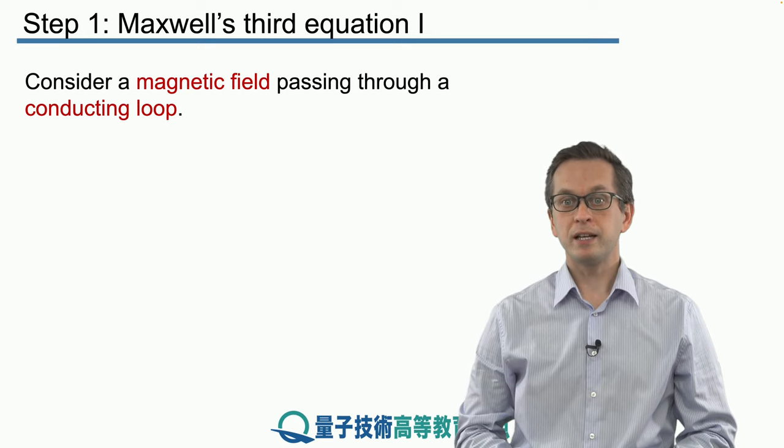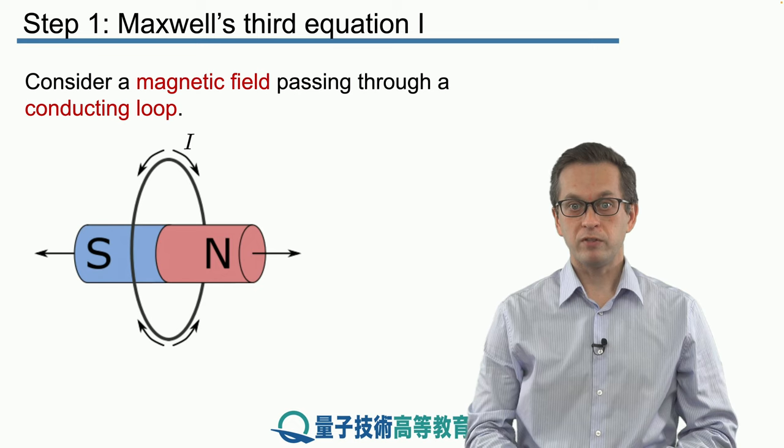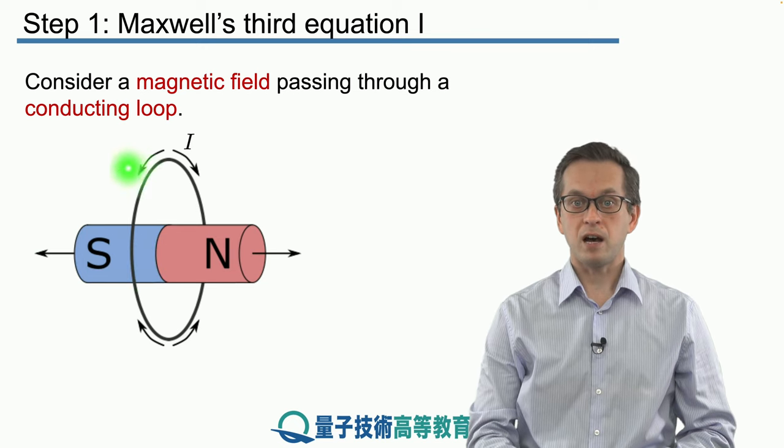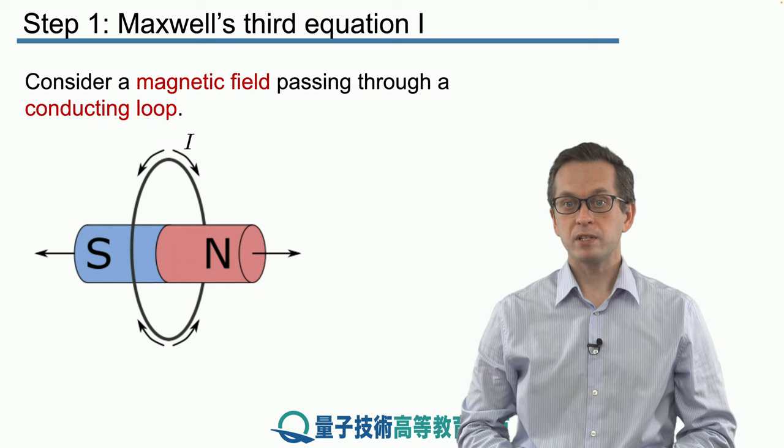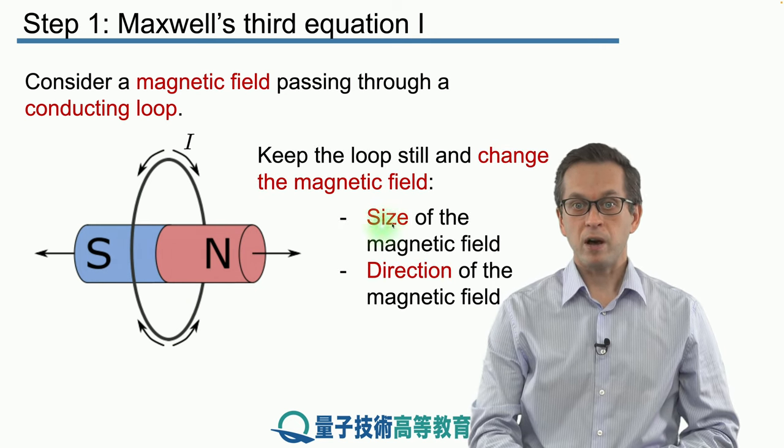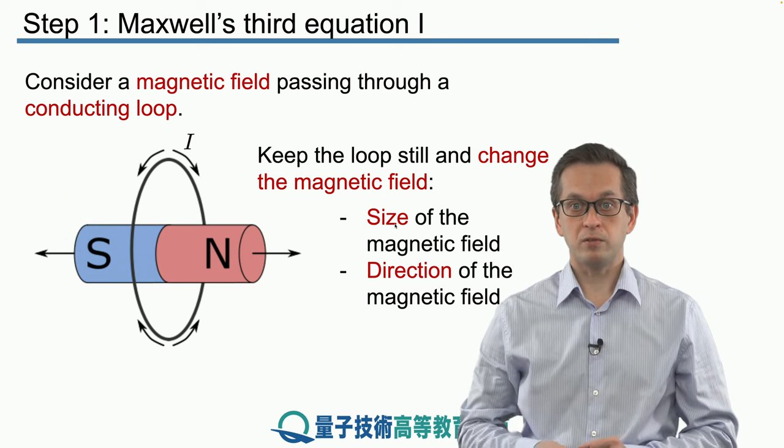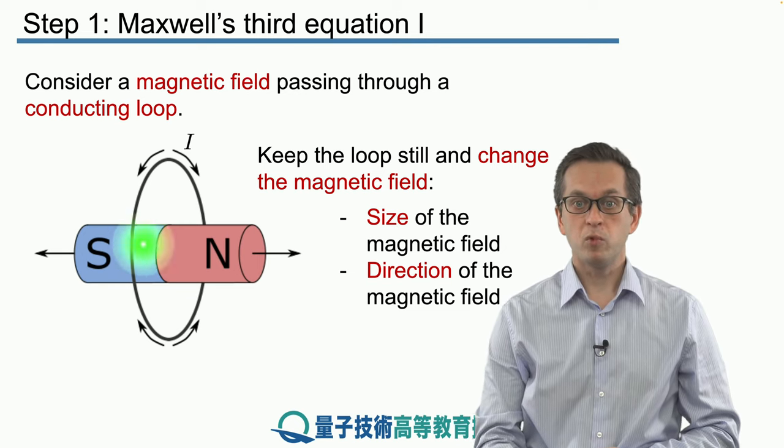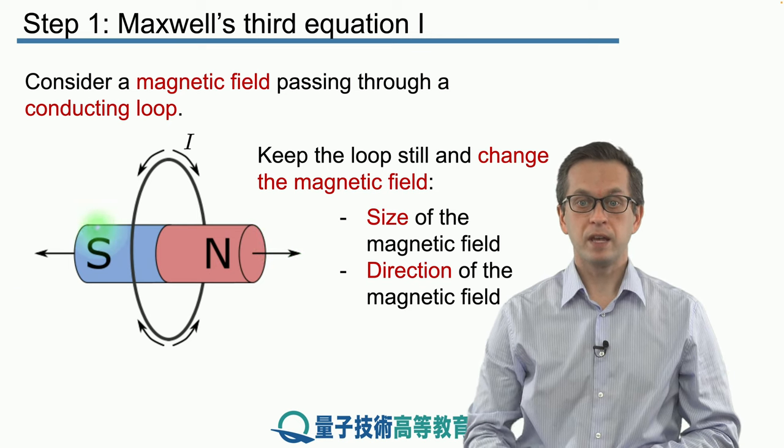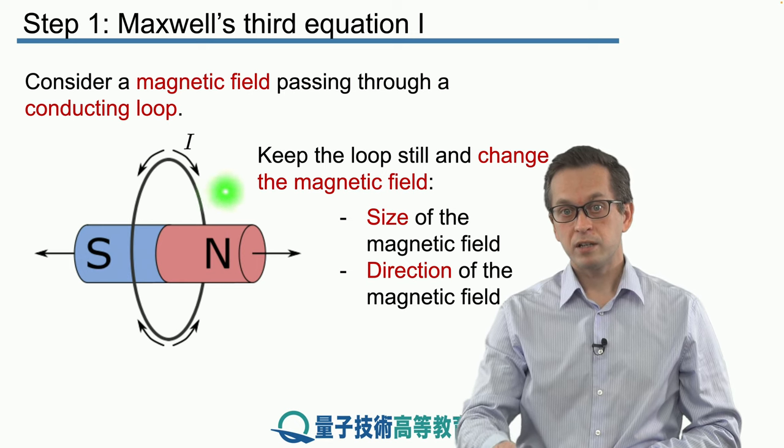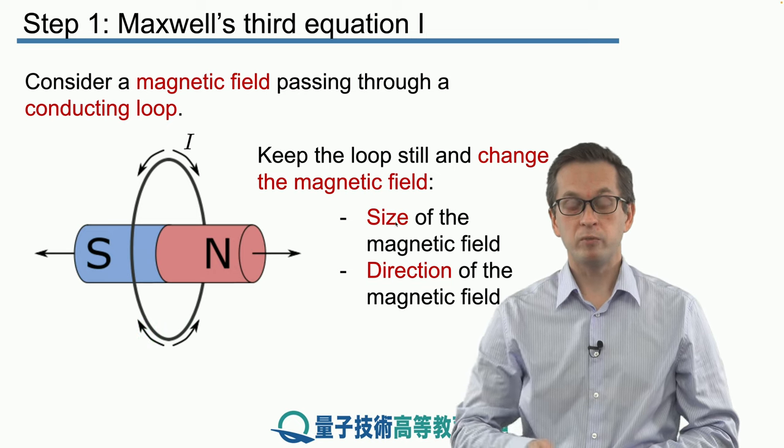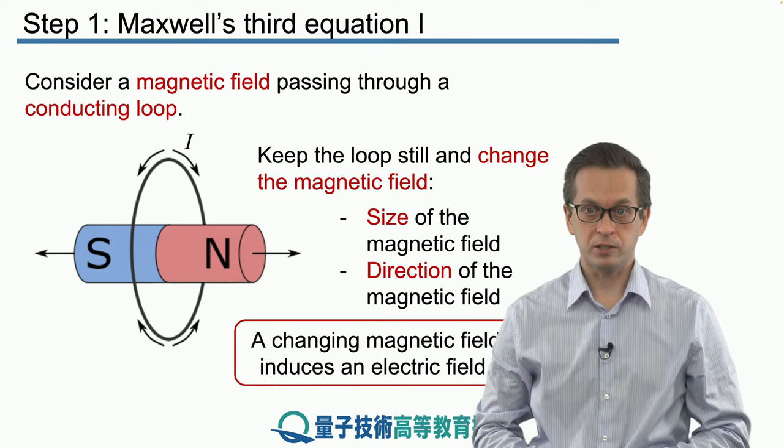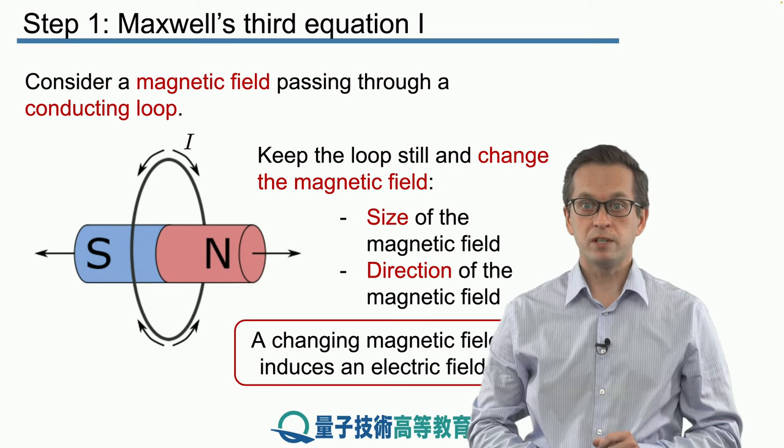Let's begin by considering a magnetic field passing through a conducting loop. We have a source of magnetic fields, for example a bar magnet, and this is our conducting loop. Now what happens when we change the magnetic field by moving the magnet in and out of the loop? It actually produces an electric current going in this loop and depending on which way we move the magnet, the direction of the current will also change. This is known as Faraday's law of induction - a changing magnetic field induces an electric field.